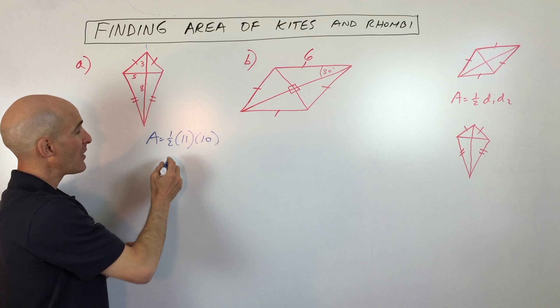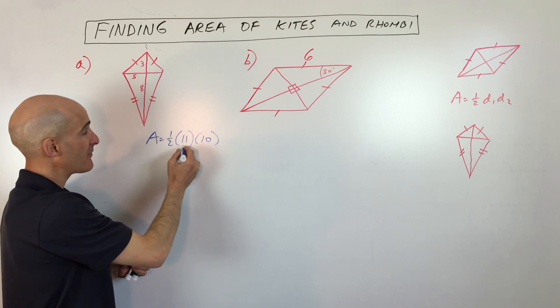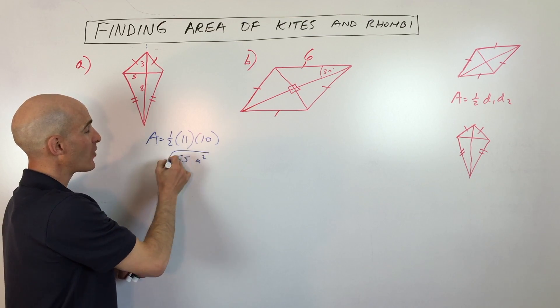So if we go ahead and multiply that out, one half times 10 is five, times 11 is 55 units squared.